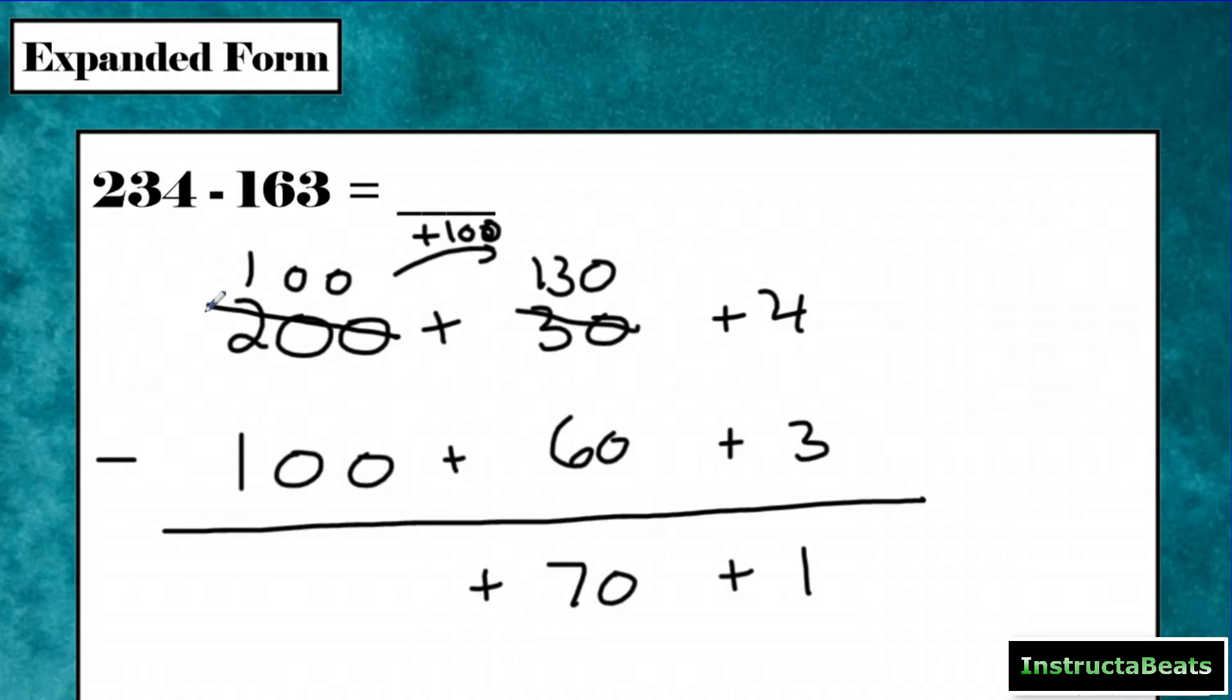And then now I have 100. 100 minus 100 is zero. So I really don't even need this plus sign because when you write an expanded form, you wouldn't do that. But we'll just put the zero there so we kind of show what we're doing. And so the difference between 234 and 163 is going to be 71.